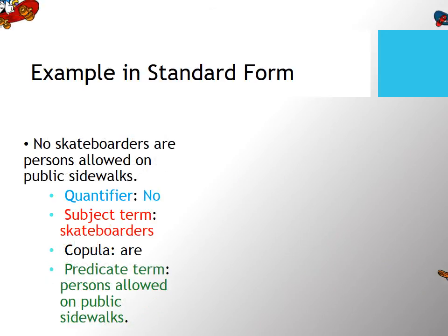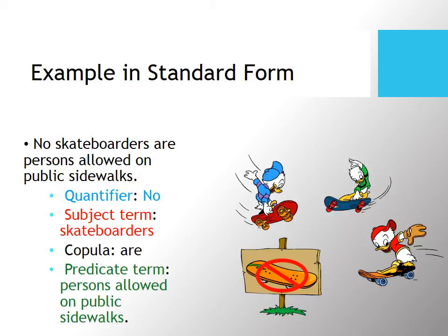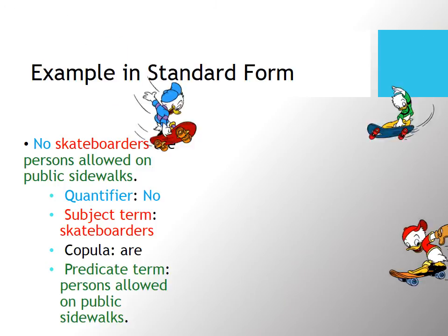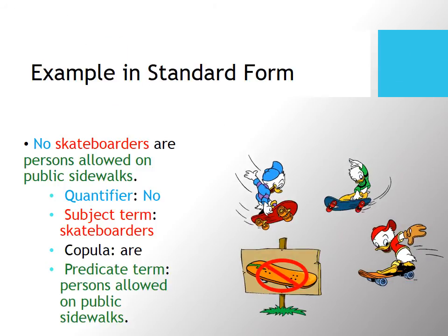Or, if somebody says 'no skateboarders are persons allowed in public parks,' that's the proper standard form translation of 'skateboarders are not allowed on public sidewalks.' Highlighting those terms in the sentence, you can see it has all four elements of standard form: a quantifier, a subject class, a copula, and a predicate class. That's all there is to it.